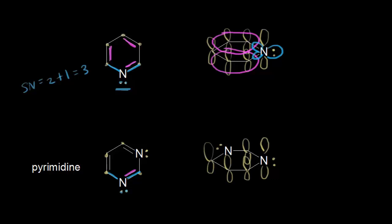Since this nitrogen is sp2 hybridized, the lone pair of electrons occupies an sp2 hybridized orbital. The exact same situation applies to the other nitrogen: there's a sigma bond, a sigma bond, a lone pair of electrons, and some electrons already participating in resonance. So this nitrogen is also sp2 hybridized with a p orbital, and that lone pair of electrons will not participate in resonance — it occupies an sp2 hybridized orbital out to the side. For pyrimidine, we again have 6 pi electrons delocalized as the p orbitals overlap side by side, so pyrimidine is also aromatic. The lone pairs on both nitrogens are localized to those nitrogens.